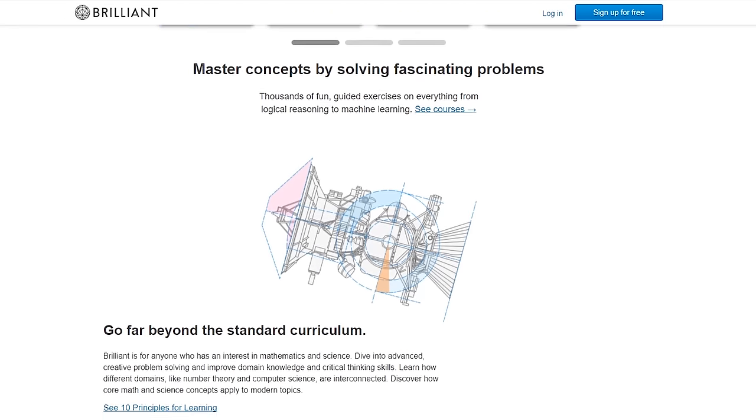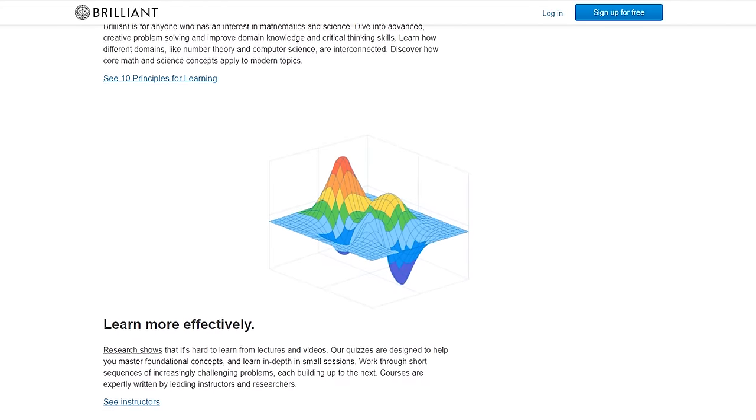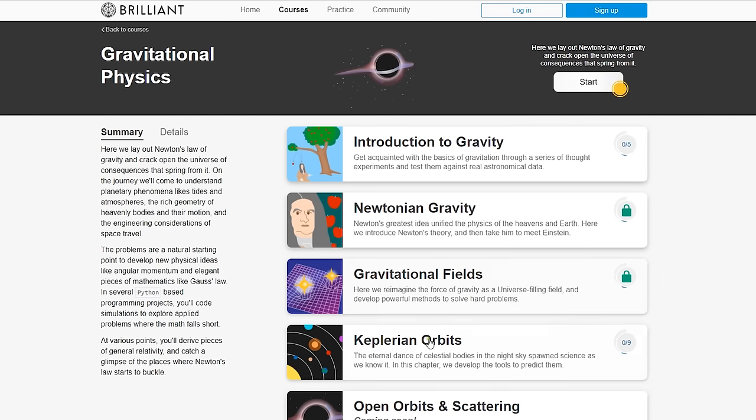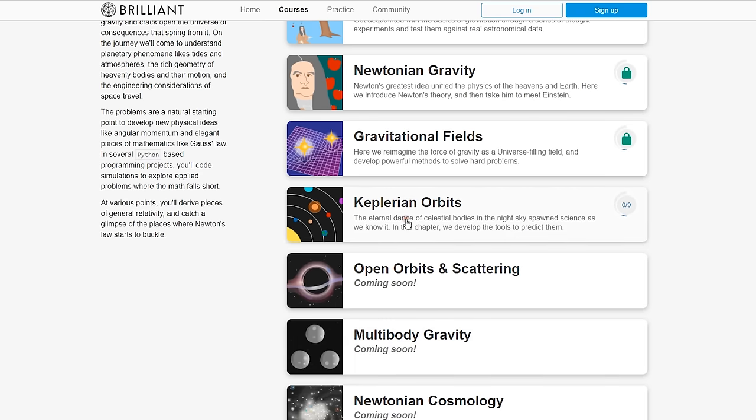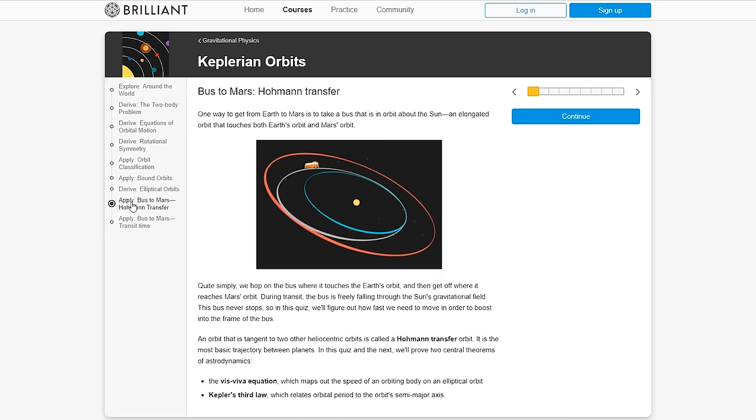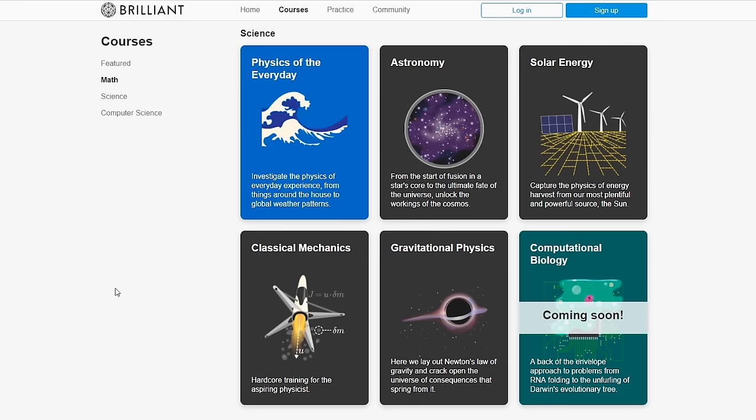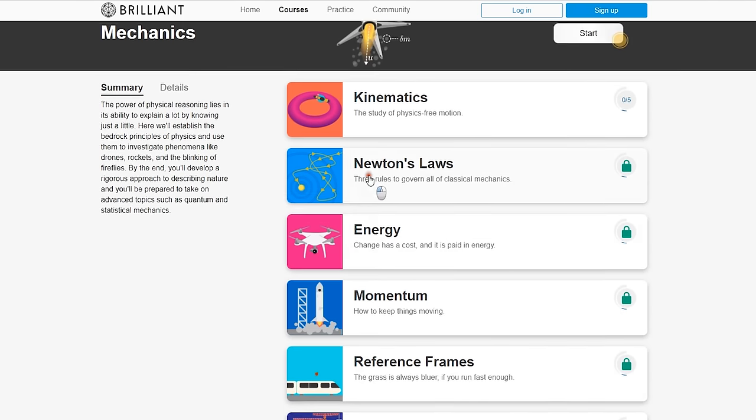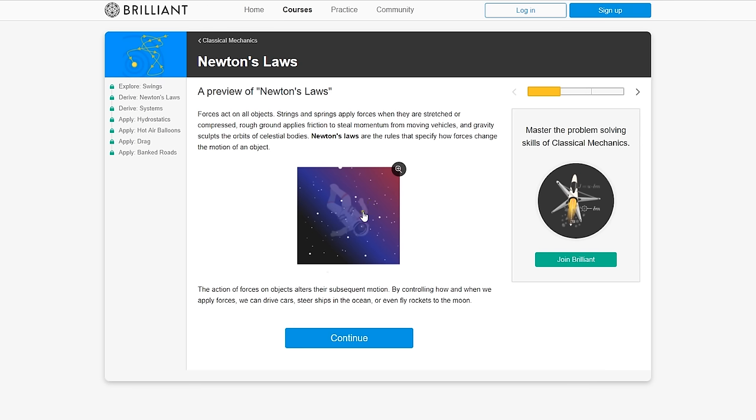Brilliant is a problem-solving website that allows you to learn by solving real-world, or in this case outer space, problems. They have a complete section dedicated to gravitational physics, covering not only Newtonian gravity but also Keplerian orbits, where you can work out how to plot a course to Mars using the Hohmann transfer method, just as if you were sending your own craft to explore the solar system. You can also test your abilities with a classical mechanics section, the discipline that Newton helped create that underpins our ability to predict the actions of any object in space and something that any budding space navigator has to know.